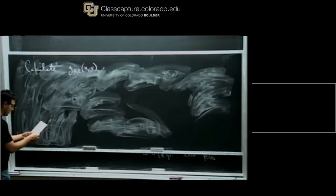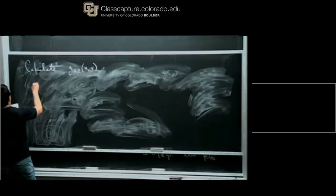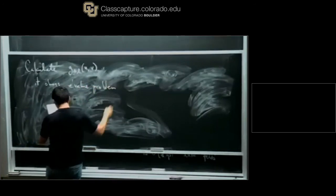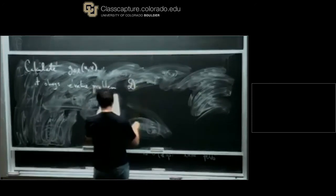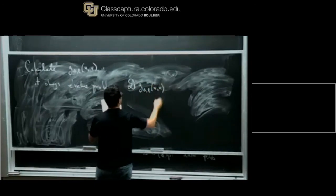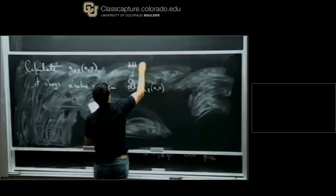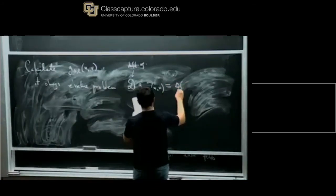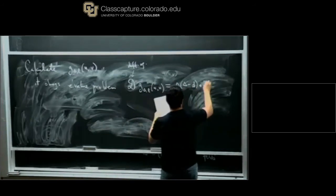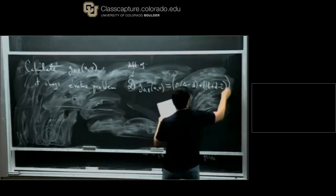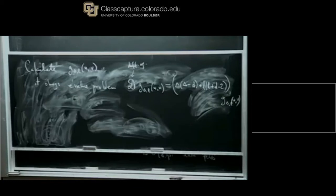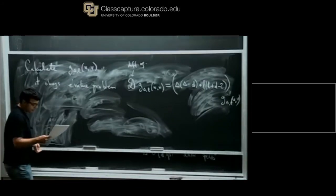The way to calculate conformal blocks is to derive a differential equation they obey. They satisfy an eigenvalue problem: some second-order differential operator in u and v acting on G_{delta,L}(u,v) equals delta times (delta minus D) plus L times (L plus D minus 2), times G_{delta,L}(u,v). I'll write out this differential operator.